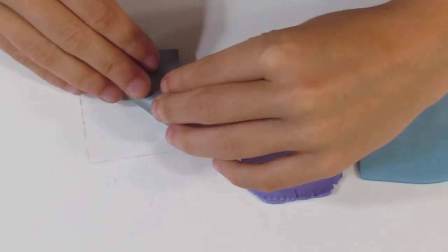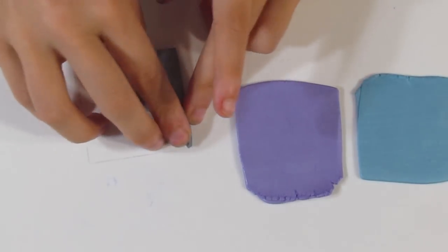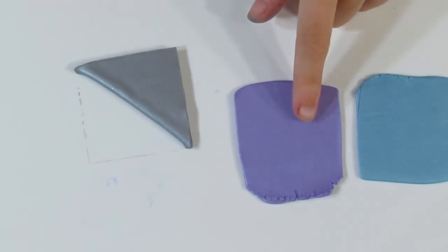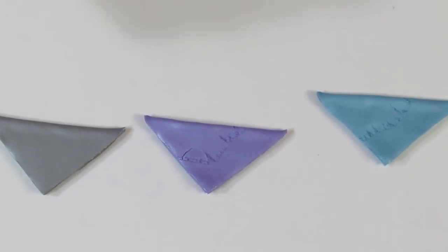And then you just fold that square in half and it creates a triangle ready for you to use in a Skinner Blend. Now do the same for these two as well. There we are. Very quick and very easy.